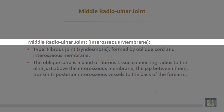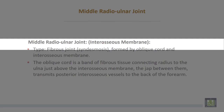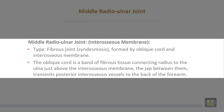The mid radio-ulnar joint consists of the interosseous membrane between the radius and the ulna, forming a fibrous joint or syndesmosis, formed by the oblique cord and the interosseous membrane. The oblique cord is a band of fibrous tissue connecting the radius to the ulna just above the interosseous membrane. The gap between them transmits the posterior interosseous vessels to the back of the forearm.